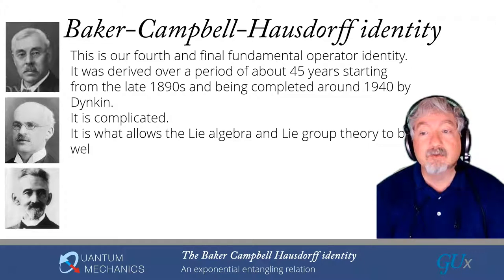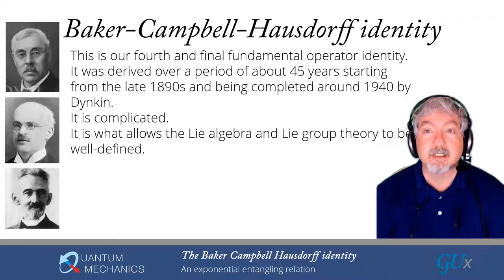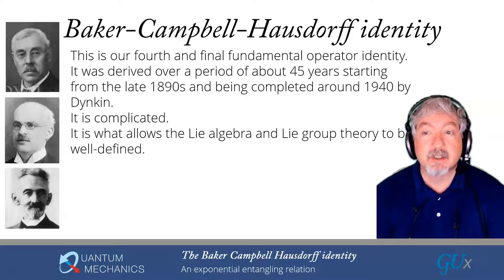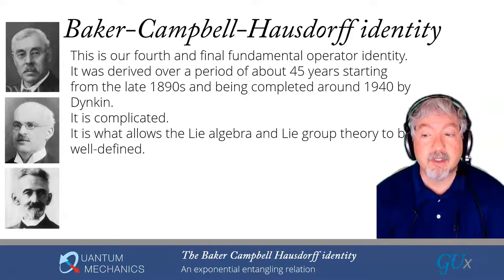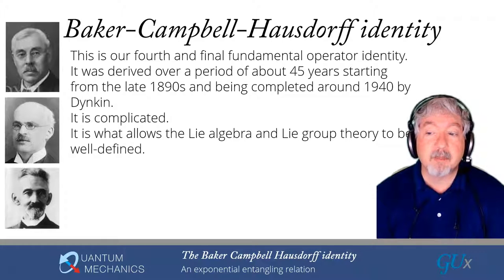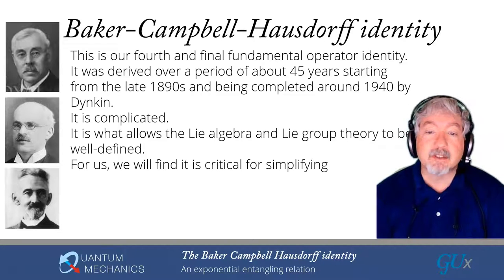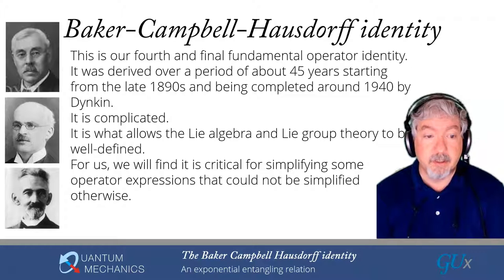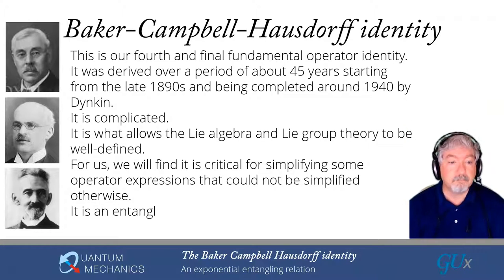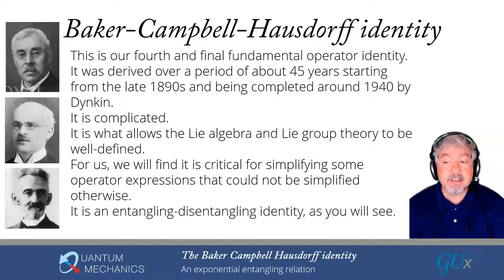It allows Lie algebra and Lie group theory to be well-defined, because it tells us that any product of two Lie group elements — written as exponentials with Lie algebra generators in the exponents — can be written as the exponential of something involving those same generators. That is what you need to verify that multiplying two group elements gives another group element. For us, it's a critical identity for simplifying operator expressions, and it is an entangling and disentangling identity — we can use it in both directions.